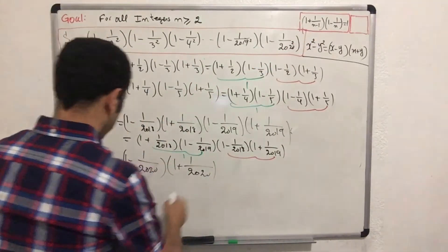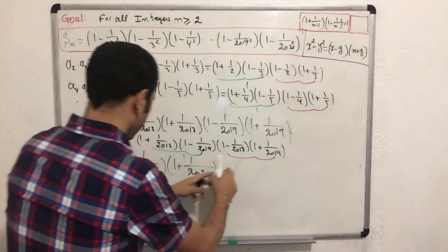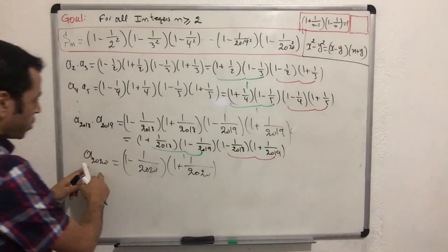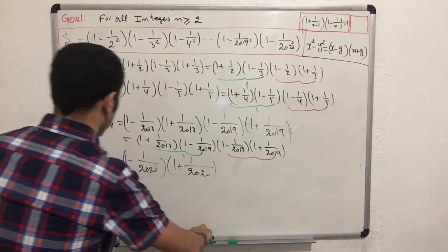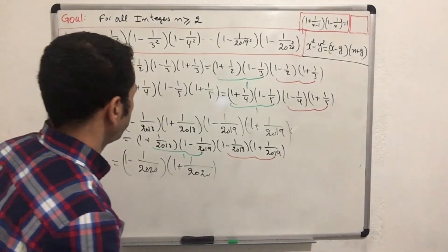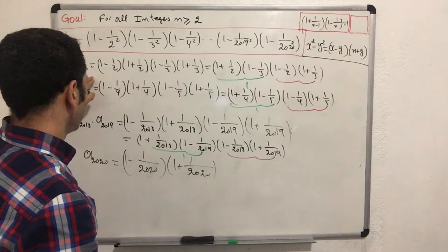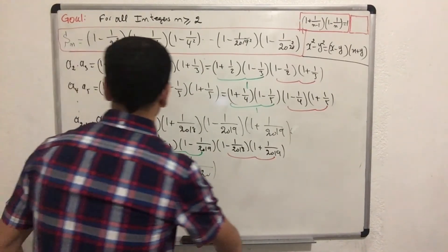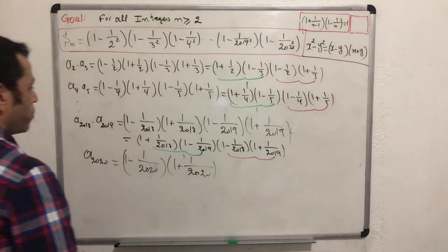The last term, a sub 2020, has no partner to multiply with since it is the final term. Now I'm moving to the final step, where I can see the whole product.